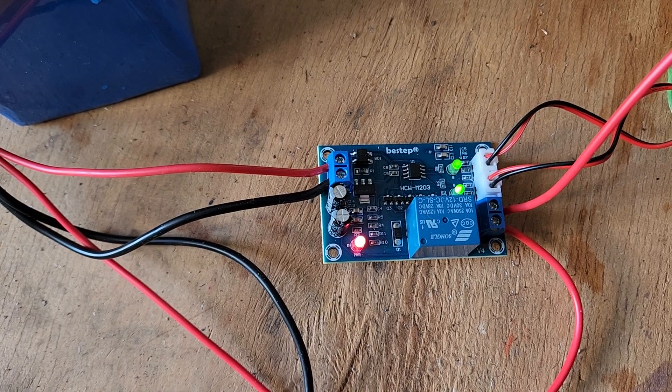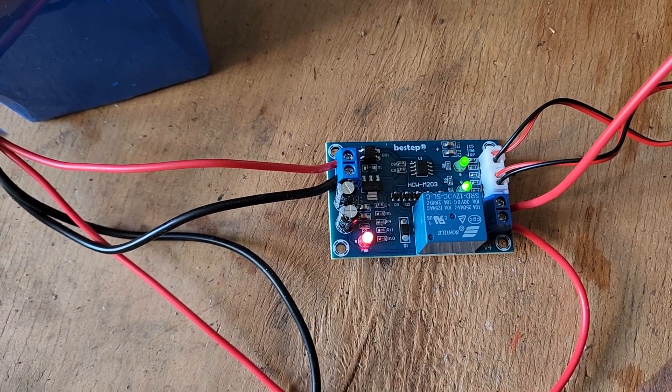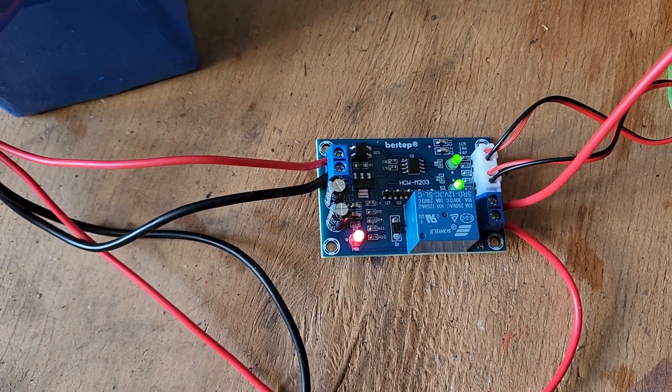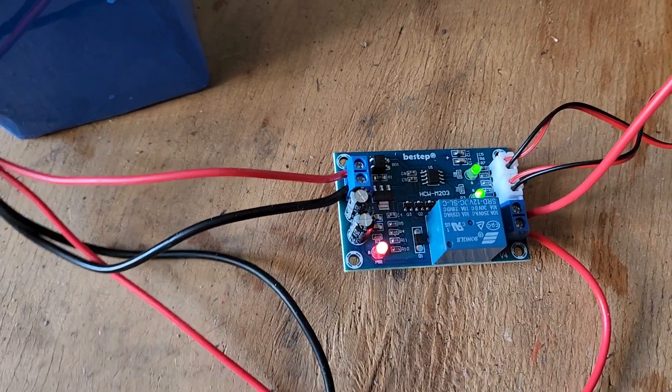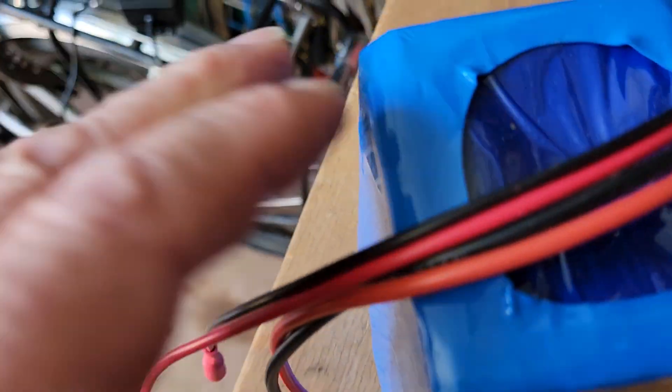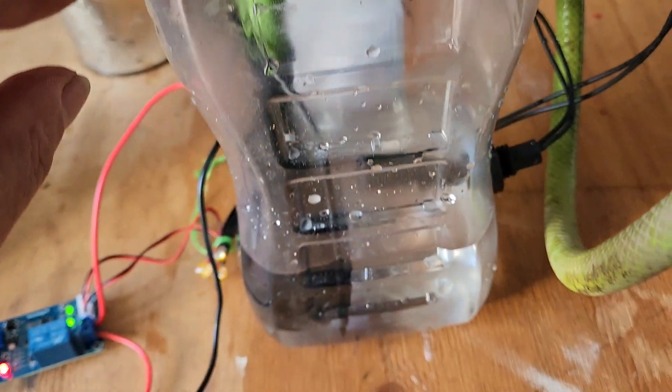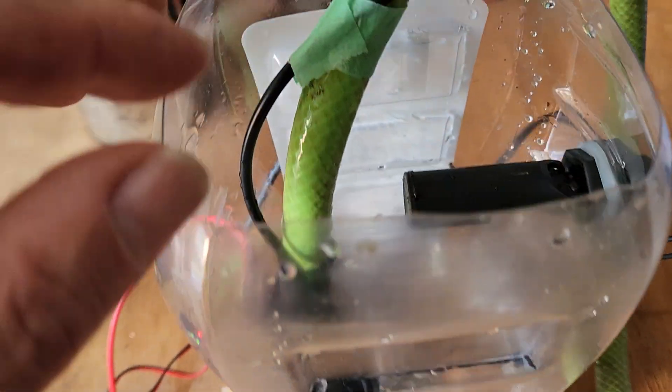This is the HCW M203 water module. We're going to have a demonstration. It's connected up to a battery, and we've also got this set up here which is a water container.